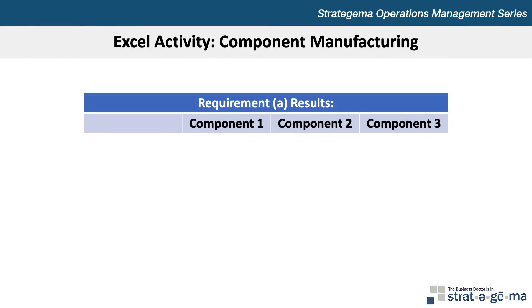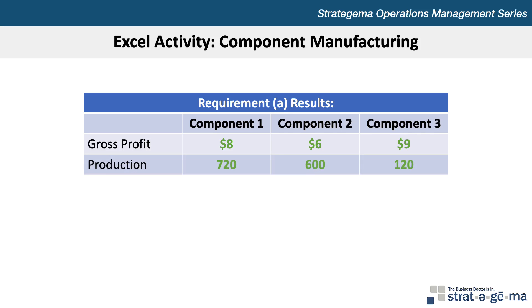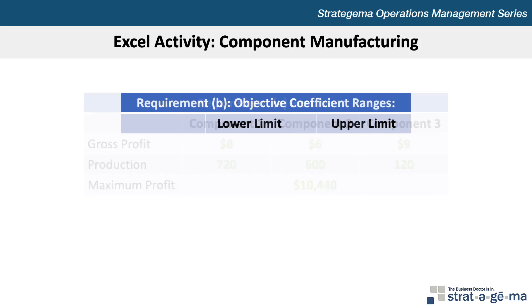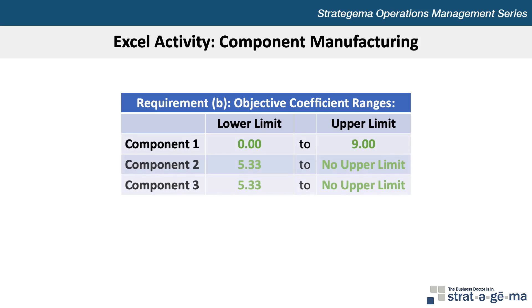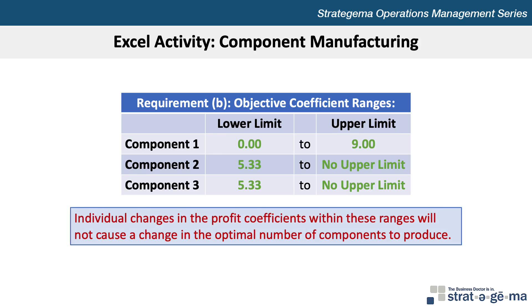Requirement A asked us to calculate the gross profit of each component, which was $8, $6, and $9 for Components 1, 2, and 3 respectively. We set up a linear program with the model resulting in production volumes of 720 units, 600 units, and 120 units for Components 1, 2, and 3 respectively, resulting in a maximum profit of $10,440. For Requirement B, the objective coefficient range for Component 1 is between 0 and 9, and a low of $5.33 with no upper limit for Components 2 and 3. This means that individual changes in profit coefficients within these ranges will not cause a change in the optimal number of components to produce.